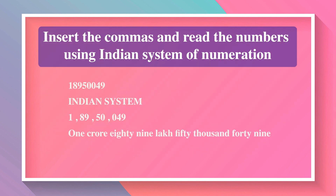Insert the commas and read the number 189500049 using the Indian system of numeration. To write this in the Indian system, we put commas from the right as 3, 2, 2, 2. So we write it as 1,89,50,049.